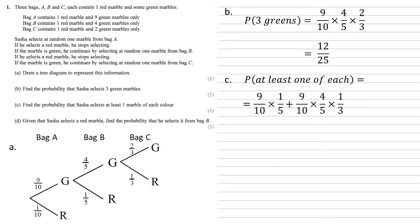So by working them out, green and red is nine tenths times a fifth. Green, green, red is nine tenths times four fifths times a third. Just working our way along that branch, multiplying the probabilities together. And this gives us an answer of 21 over 50.